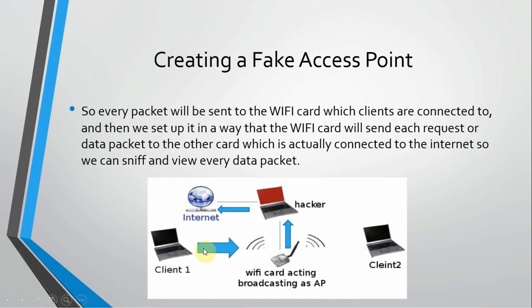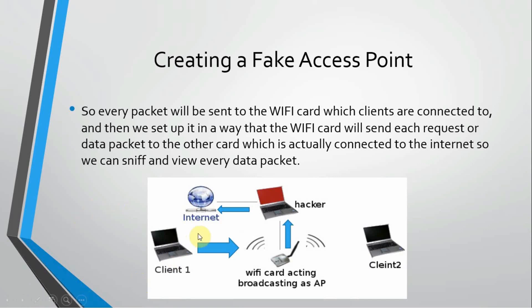To summarize: we have two cards on this machine — one connected to the internet, and one Wi-Fi card broadcasting signals but not directly connected to the internet. When a person sees the open network and connects without a password, and asks for google.com or facebook.com, those data packets are sent to this card, then to the hacker machine where we can sniff and read them in Wireshark.